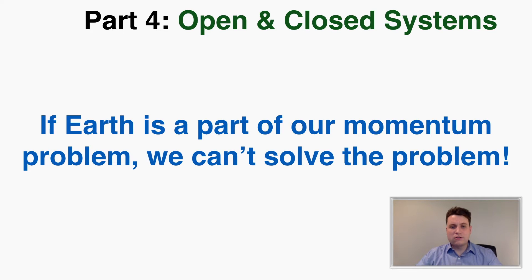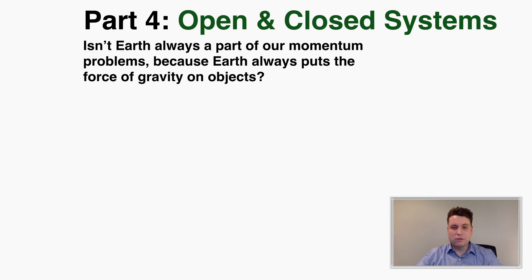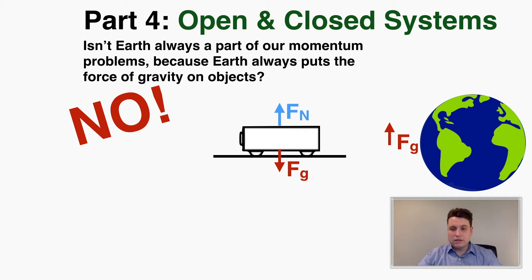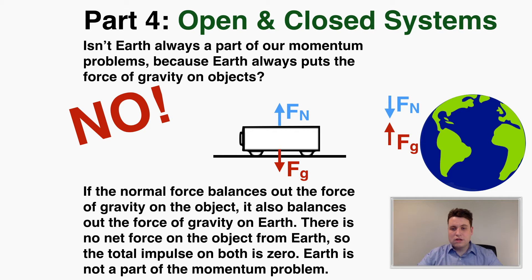This leads to another question: isn't earth always a part of our momentum problems because earth always puts the force of gravity on objects? The answer is no. When earth puts the force of gravity down on an object, it's also pulled up by that object by Newton's third law. But the earth is also normally applying a normal force up on the object, and by Newton's third law, the object applies a normal force down on the earth. So in situations where gravity balances out the normal force, the earth is normally not a part of our problem — the total impulse on the object from earth is zero.